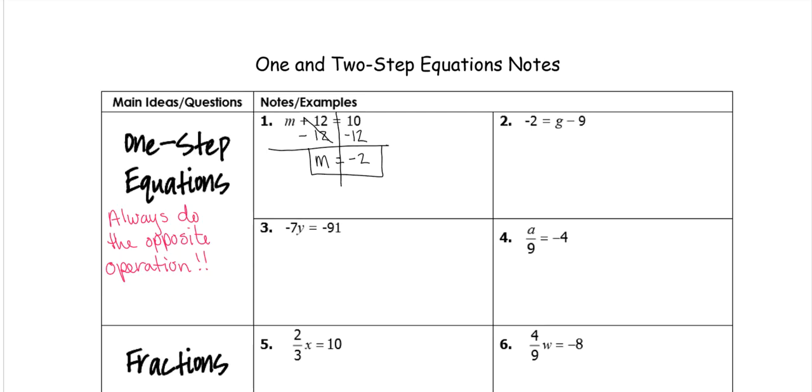For number 2, our variable is on the right-hand side. It's still the same process, but just keep in mind we're always moving stuff away from the variable. So you don't want to do the opposite here, which would be to add 2 to both sides, because that doesn't help us get stuff away from the variable. We want to move our 9 away from the variable. So since it's subtracting 9, we're going to add 9 to both sides.